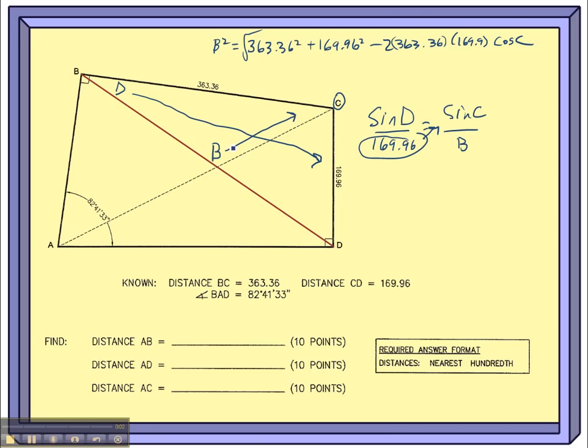Alright, recap here. We put in this diagonal, we found the length of that diagonal after finding C using the law of cosines. Then we found this angle, this acute angle inside of angle B, using the law of sines. We stored that in the calculator as D.